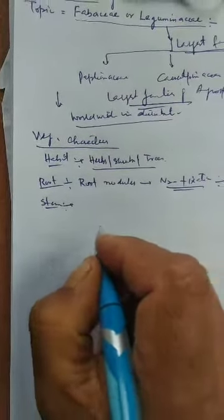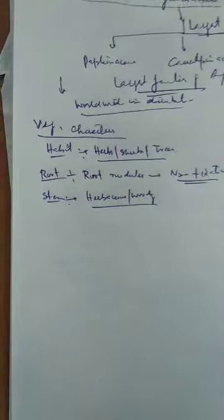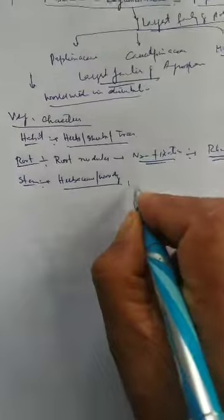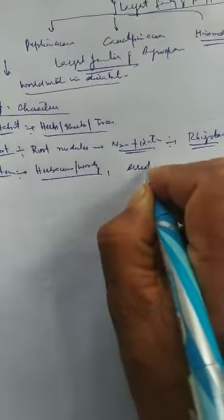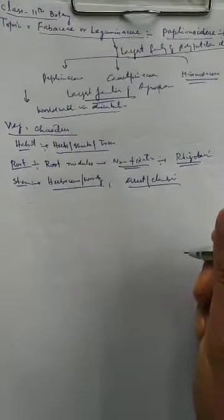The second character is the stem. The stem may be herbaceous or woody — in some members it is herbaceous while in others it is woody. The stem may be erect or a climber or tendrillar, which climbs over a support. Generally, the stem of this family is branched, cylindrical, and angular.